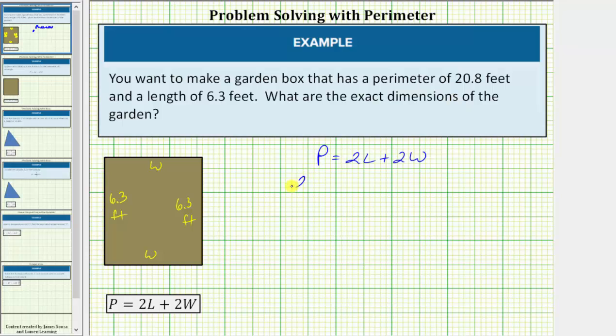The perimeter is 20.8 feet. So 20.8 equals 2 times the length of 6.3 feet plus 2 times the unknown width.